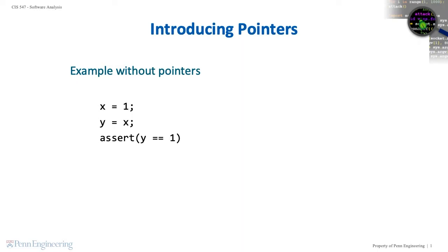Suppose the goal of our data flow analysis is to prove the assertion that y equals 1 at the end of the program. To do this, we can perform a forward must analysis that tracks the value of program variables. It begins by analyzing the assignment to x and infers that the value of x at this program point must be 1. It then analyzes the assignment to y and infers that since the value of x before the assignment is 1, the value of y after the assignment must also be 1. The analysis thus proves that the assertion y equals 1 is valid.